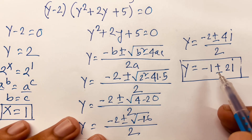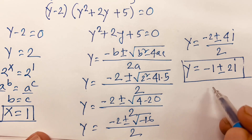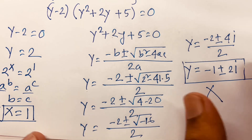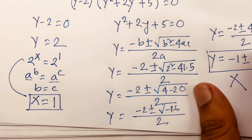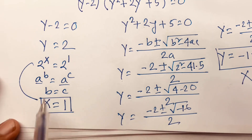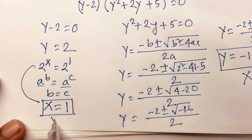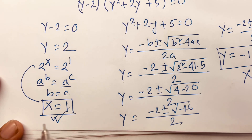But this is an imaginary result. It is rejected because we need real parts only. So we find the value of x is equal to 1.